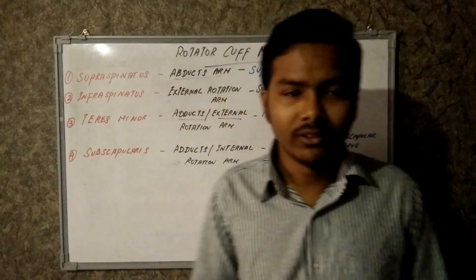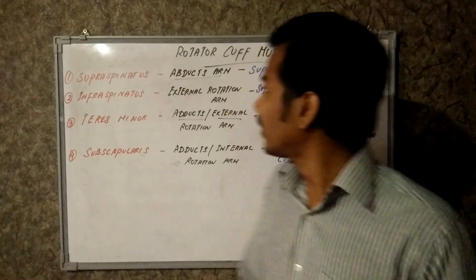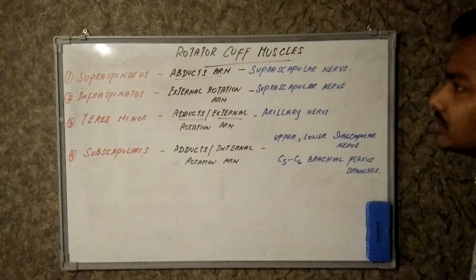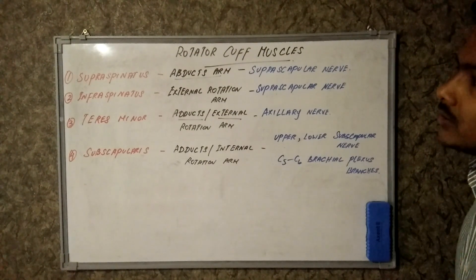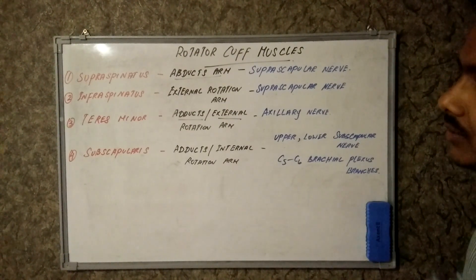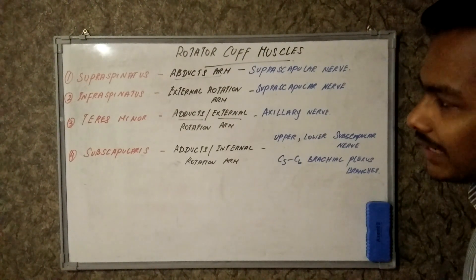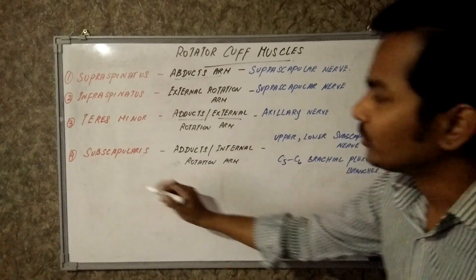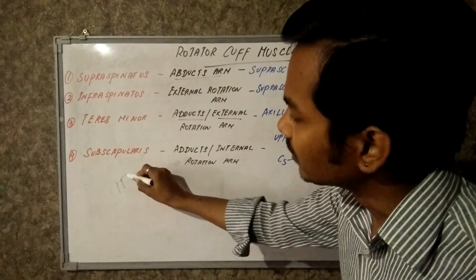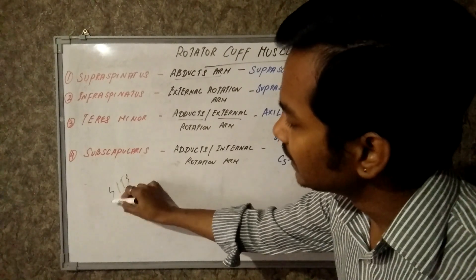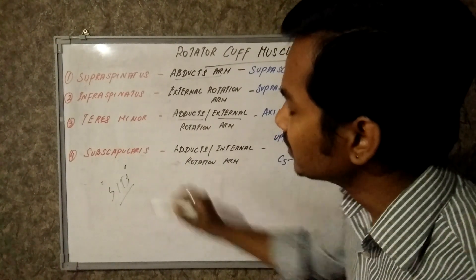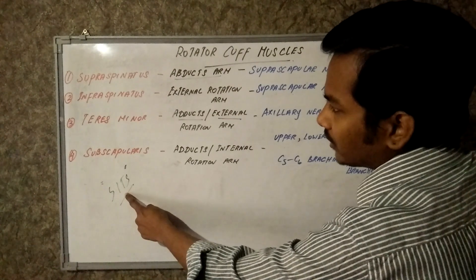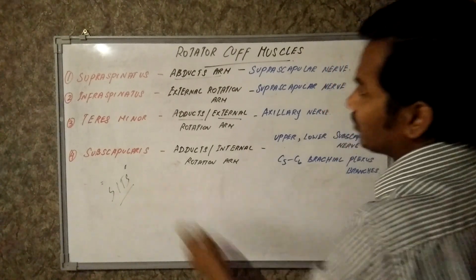Hi everyone, this is Vignesh from Easy Way to Learn Medicine. Today we are going to see the rotator cuff muscles, which is important for the USMLE Step 1 examination. The four important muscles are supraspinatus, infraspinatus, teres minor, and subscapularis. We call it the SITS mnemonic.